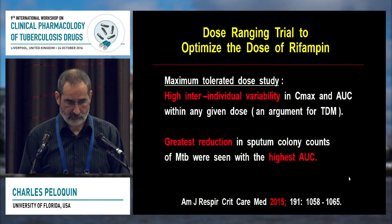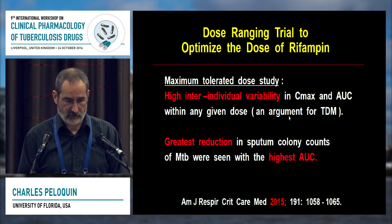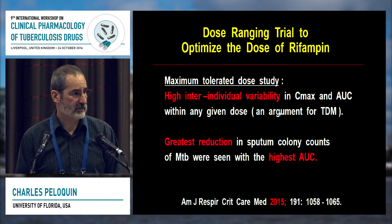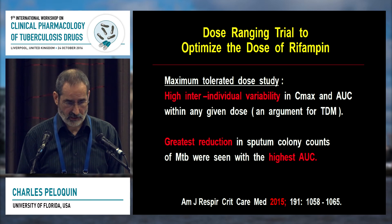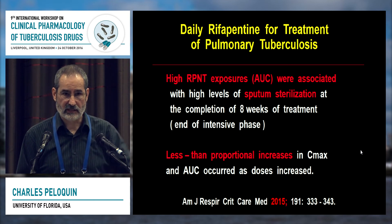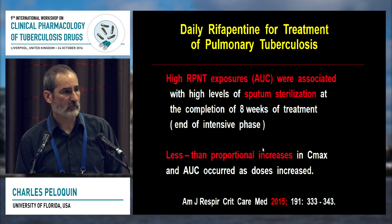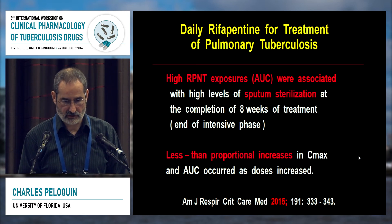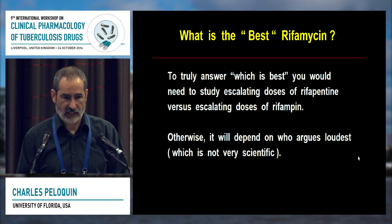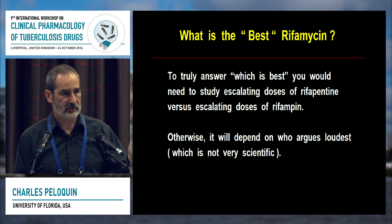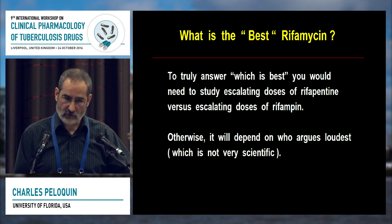There was high inter-individual variability — roughly 44% variability with the rifamycins depending on the study — suggesting you might want to control for that. The greatest reduction in bacterial burden is clearly linked to the highest AUCs. Similarly with rifapentine, high exposures and AUC were associated with greater degrees of sputum sterilization, but there were less-than-proportional increases in rifapentine concentrations. To truly answer which drug is best, you would really need a study including escalating doses of both drugs — without that head-to-head dose escalation study, it's hard to answer definitively.